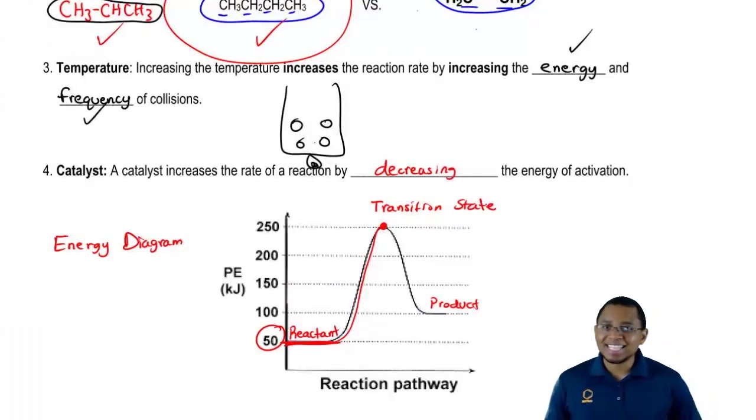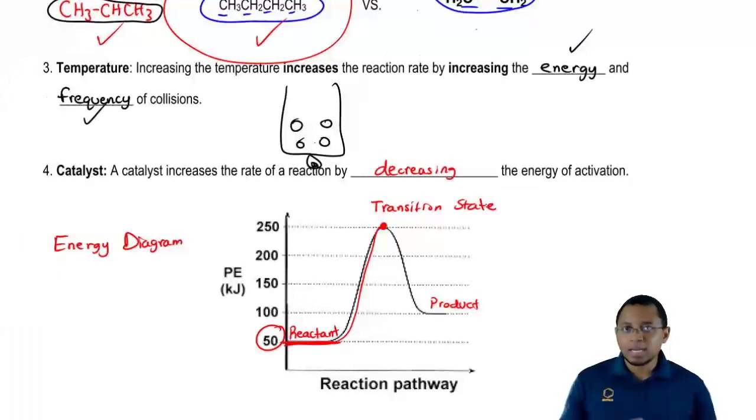Just realize a transition state is a hybrid. The transition state looks a little bit like the product and a little bit like the reactant. When you're at the transition state, you have two possibilities. You could either slide back down to become a reactant again, or if you have enough energy, you can tip over and slide down to become a product.